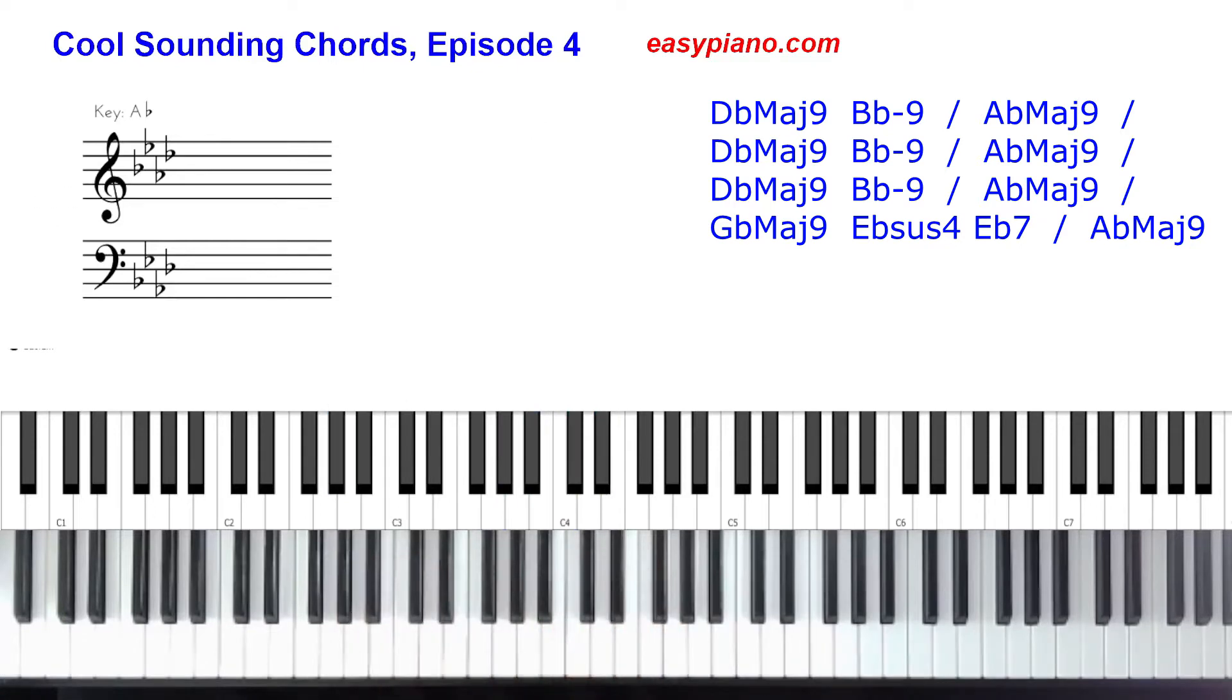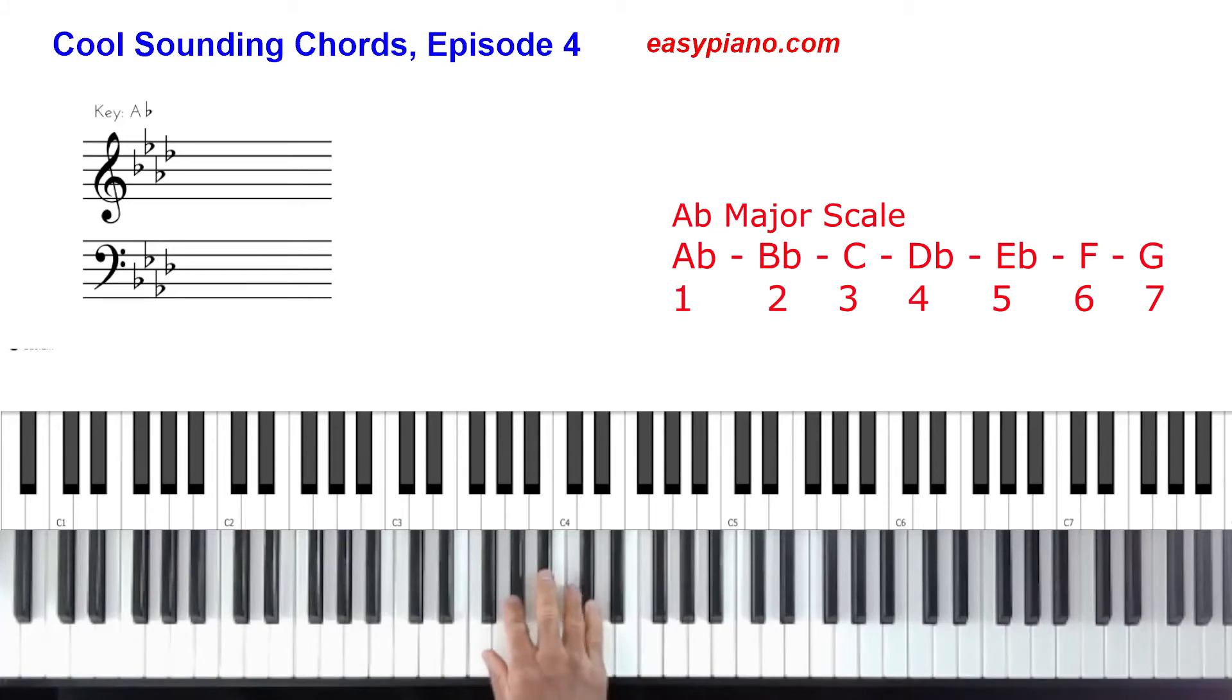Okay, so there we have it. Here's what's going to happen. As you can see on the screen, we're going to start off with our four chord. Before we actually get into the chord numbers, let's just go through real quick the key of A flat: one, two, three, four, five, six, seven, and then we're back at one again.